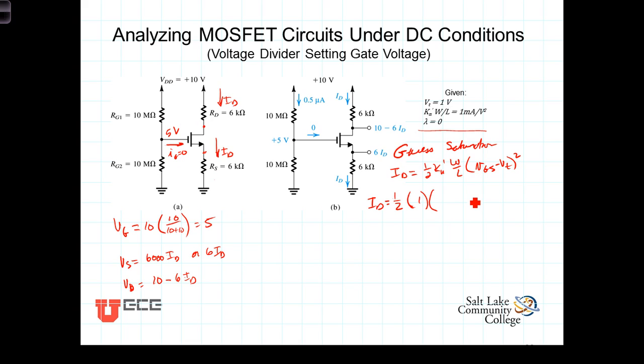So we just go ahead and write that in there. One half times 1 times V_GS. Well V_GS, we don't really have V_GS. Let's write an expression for V_GS. We know V_G is 5. V_GS then is going to equal the voltage of the gate, 5 minus the voltage of the source. The voltage of the source in milliamps and kilohms is 6*I_D.